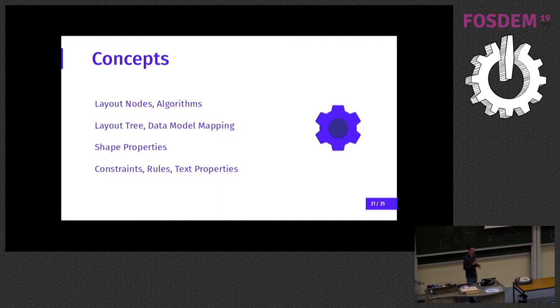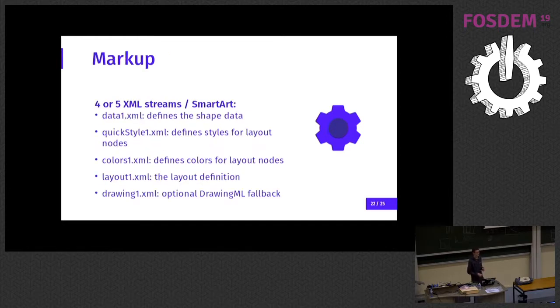And the very last concept is the text properties. So next to the shape properties, you can define all the aspects of the text content appearing inside these shape nodes. Basically these are the high-level concepts. And once you have a rough understanding what these mean, then it makes sense to jump to the reference and actually read about what the individual XML elements, attributes, and attribute values are doing.